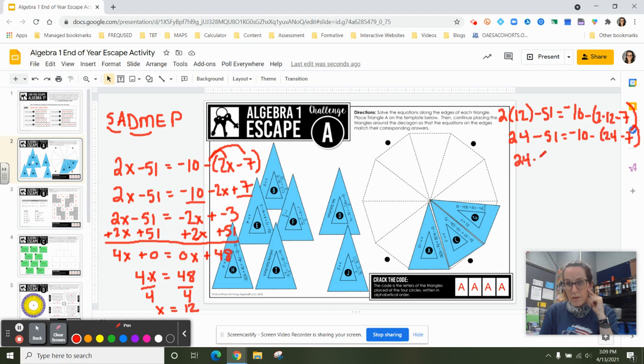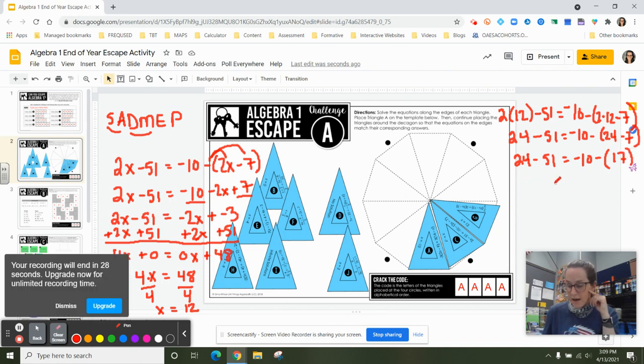So I've got 24 minus 51 equals negative 10 minus, let's see here, 24 minus 7 is 17. And then I have 24 minus 51, which gives me a negative 27. And negative 10 minus 17 is a negative 27. So huzzah, I know I did the problem the right way, because I got a true statement. Negative 27 is equal to negative 27. So that's your check.